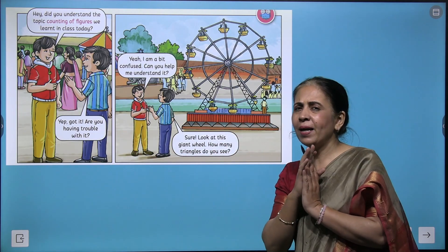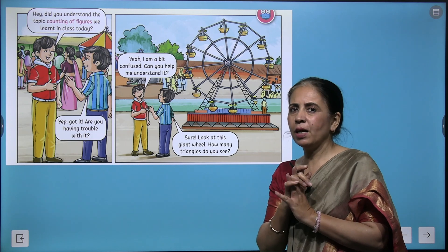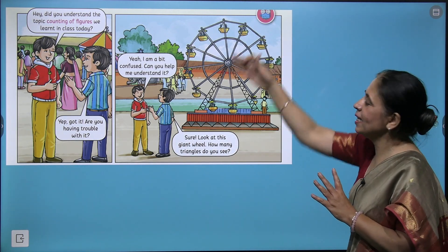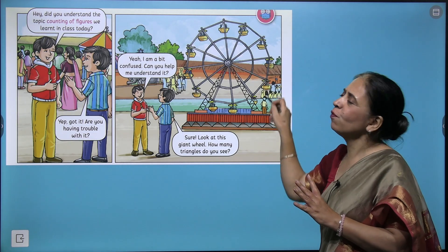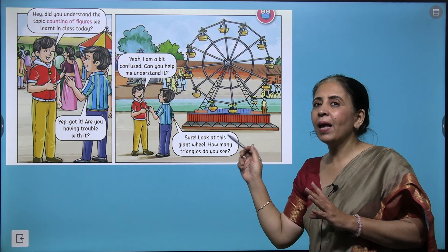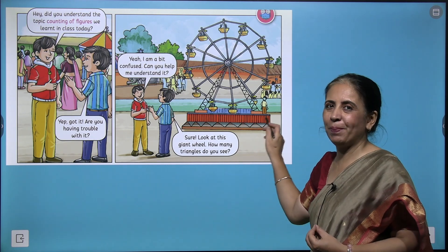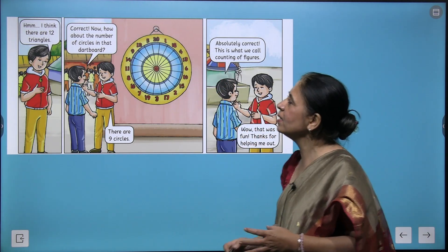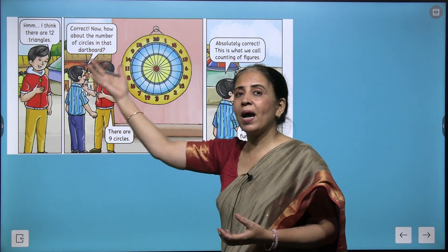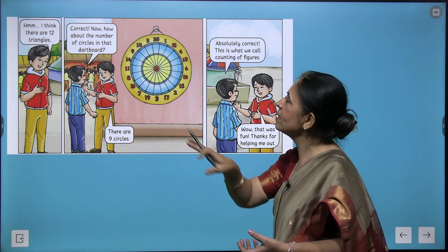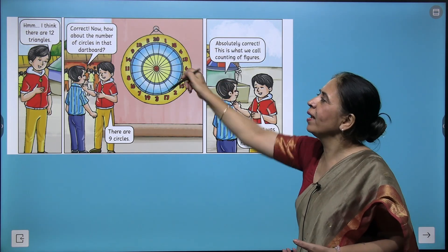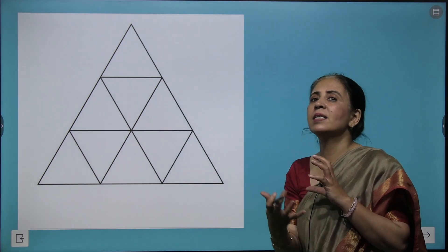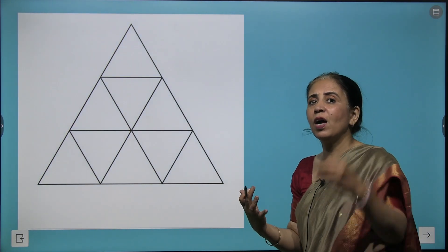Two friends were talking — one said his teacher taught him counting of figures but he was confused. His friend asked: can you count the number of circles and triangles in this giant wheel? After some thinking, he came up with the answers: 12 triangles and 9 circles. Then he asked: can you find the number of circles in this dartboard? This is what we learn — looking at different figures and counting their shapes.